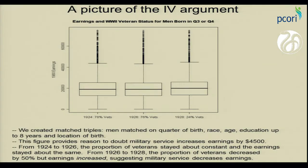A picture of what's happening: comparing people born in 1924, 1926, and 1928, we see those born in 1928 earn a little more, and there are far fewer veterans in 1928 compared to 1924 and 1926. The IV idea is that military service is causing a reduction in earnings because when there are fewer veterans, earnings go up. Instead of looking at the treatment effect directly, we compare groups that have different amounts of treatment.